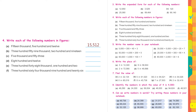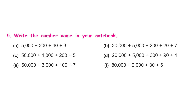...so together it becomes 359,221. The rest of the sums you can do yourself. Question 5: write the number name in your notebook. In the previous question, names of numbers were given and you wrote them in figures; now they have given you the expanded form and you have to write them in words.